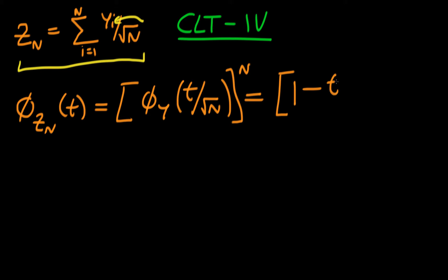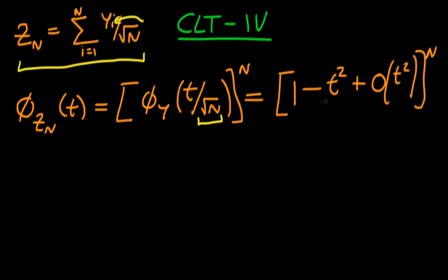We know that equals 1 minus t²/2n plus a term of order t²/n, all to the power n. We need to amend our characteristic function to account for the √n factor, so we get t²/2n in the main term. This final order term tends to zero as n tends to infinity, because it tends to zero faster than the second term — that's the definition of this order term.